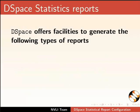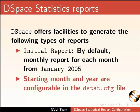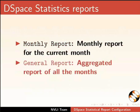DSpace offers facilities to generate the following types of reports: Initial report — by default, a monthly report for each month from January 2005; the starting month and year are configurable in the dstat.cfg file. Monthly report — a monthly report for the current month. General report — an aggregated report of all the months. Switch back to the terminal.